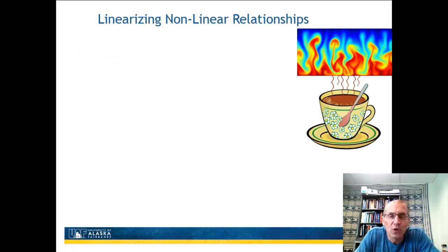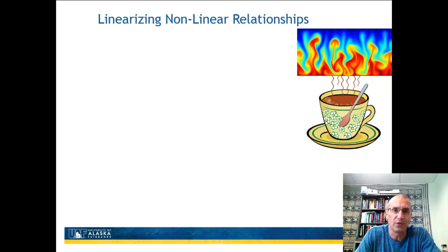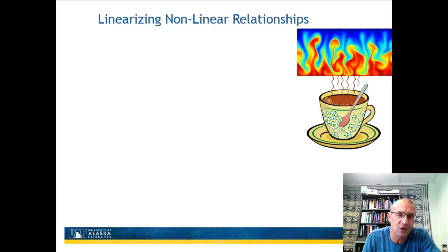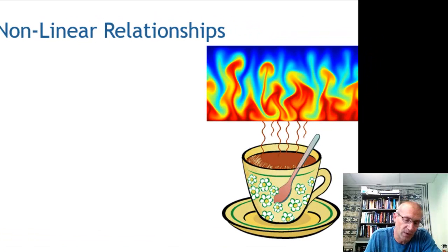In the previous video, we looked at doing least squares regression and found out how to quantify the error. Now I want to start looking at some more complicated regressions that we can still do linearly in the end, but what we need to do first is sort of linearize those equations. I'm going to use an example of a case where this might occur.